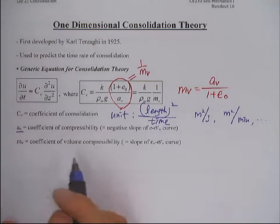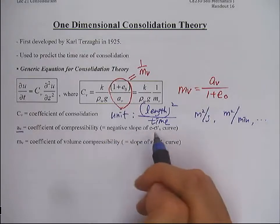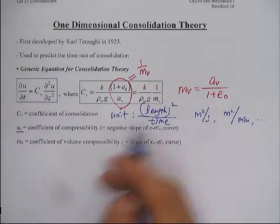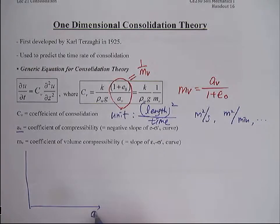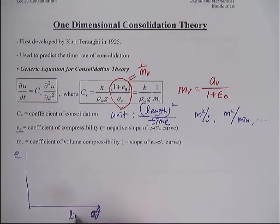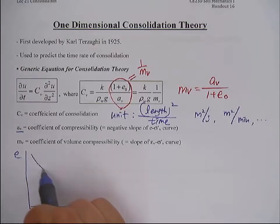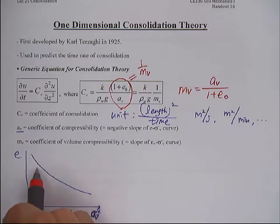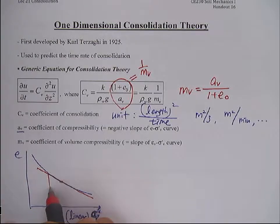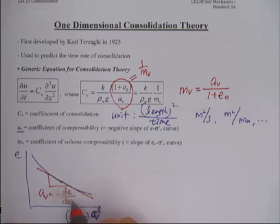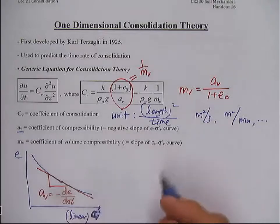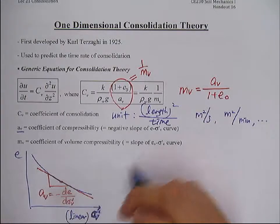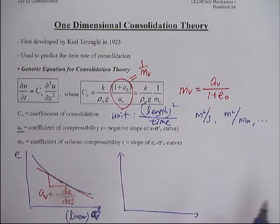The coefficient of compressibility Av is defined as the negative slope of the e versus sigma V prime curve on a linear scale — not logarithmic. You have a curved shape, and the negative slope is called Av, equal to minus delta e over delta sigma V prime. The coefficient of volume compressibility Mv is the slope of the epsilon V, the volumetric strain, versus the sigma V prime curve. Because epsilon V is the volumetric strain, it is defined as minus delta e over (1 + e₀).